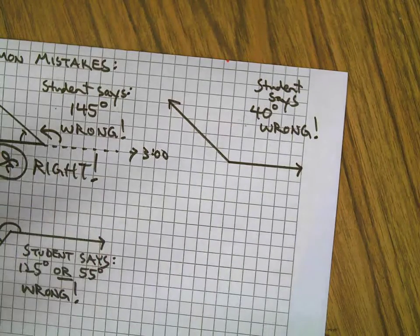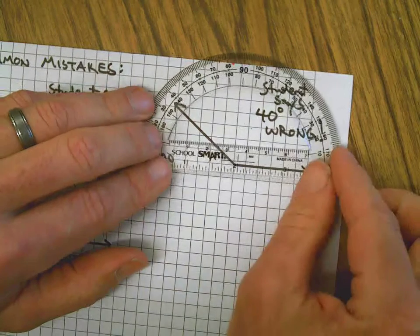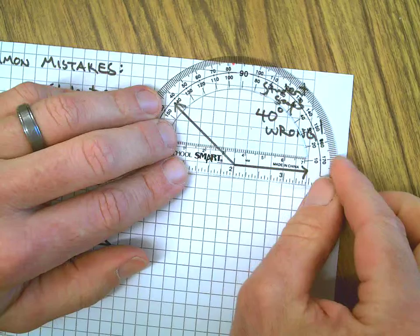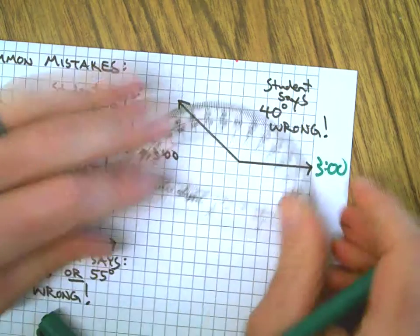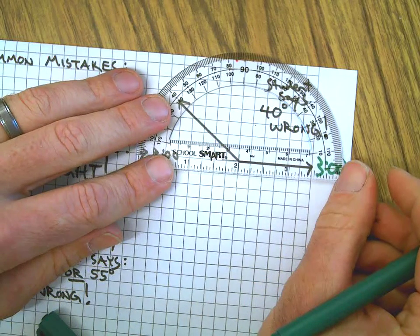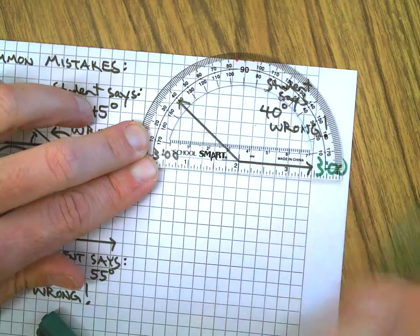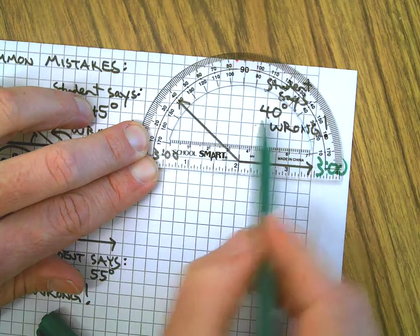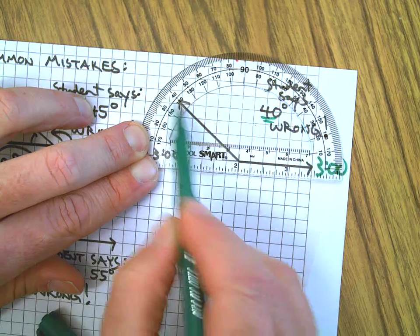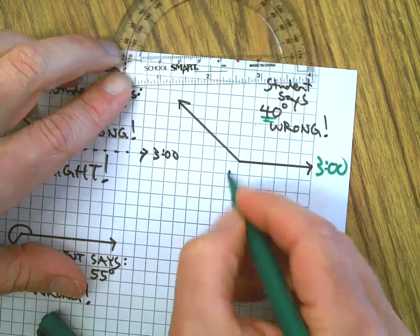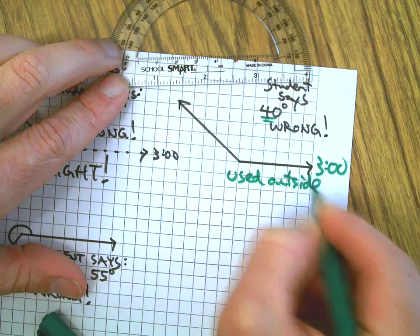Let's check out this one. We've got this mistake - student says 40 degrees. Wrong. What did they do wrong? Let's follow the steps for the perfect world. If we line it up here, we start at three o'clock over here, following those same steps from the first minute of this video. Line it up, three o'clock.